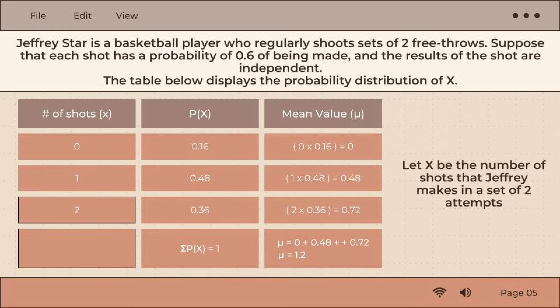Next is 1 and 0.48, so 1 times 0.48 equals 0.48. Next is 2 and 0.36, and 2 times 0.36 equals 0.72.